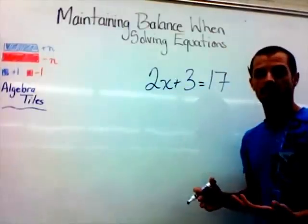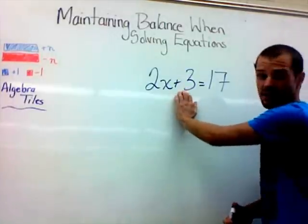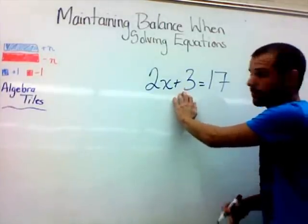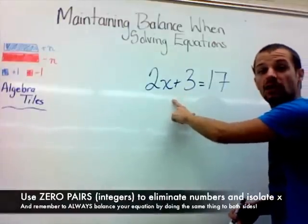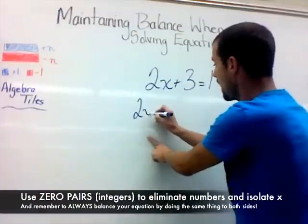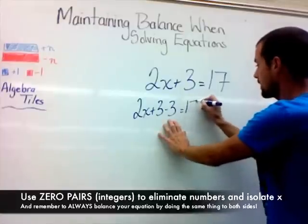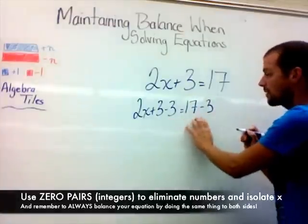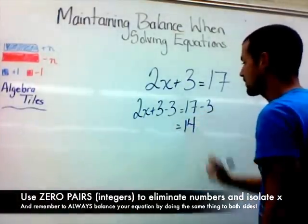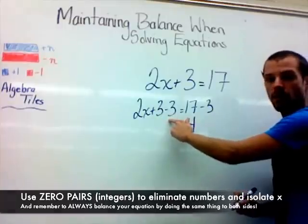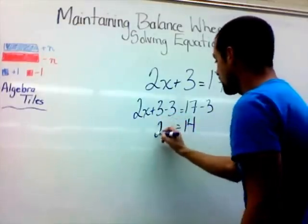What's the easiest thing for us to get rid of first? The easiest operation to work with right off the top is the loose 3 units. It's a positive 3, so to get rid of it we have to bring in 3 negatives. So we write: 2x plus 3, subtract 3. What we did to one side we have to do to the other, so it becomes 17 subtract 3. 17 subtract 3 gives us 14 on this side, and adding negative 3 to positive 3 leaves us with 2x.